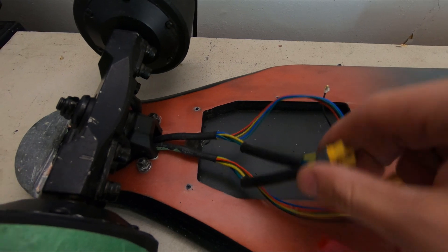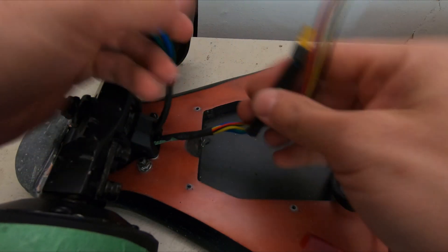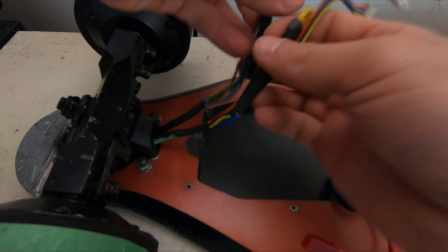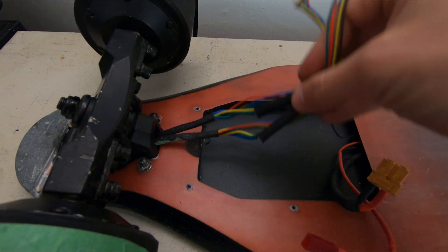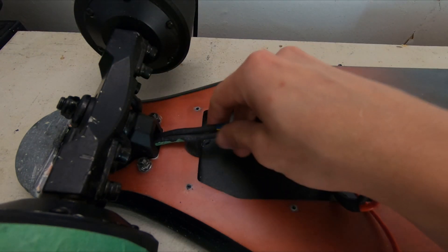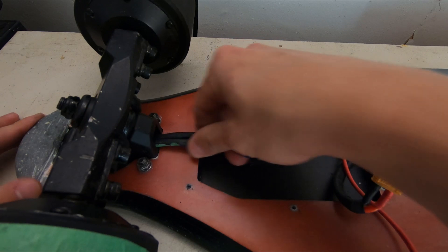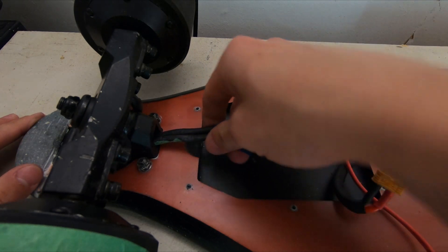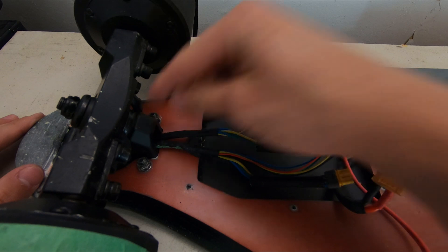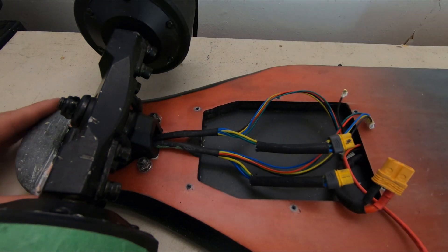Alright. So now that we have the main board removed, we have all of our wires here that run back to the wheels. Because this is a drop through deck, you actually have to feed these wires out. There's no easy way to remove a wheel without taking the trucks off. And I'll show you how to do that just here in a second.